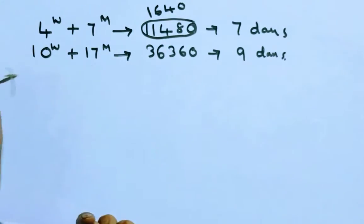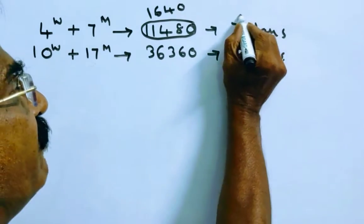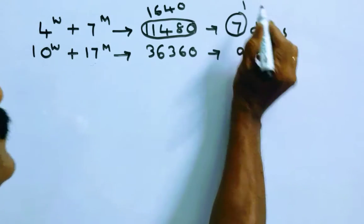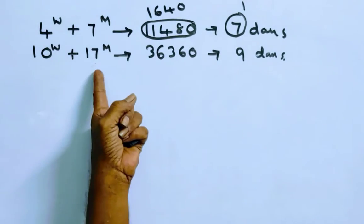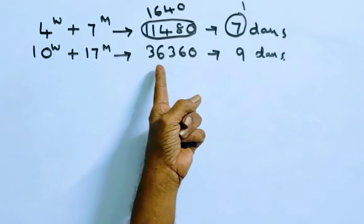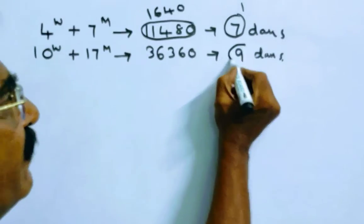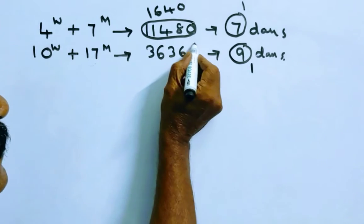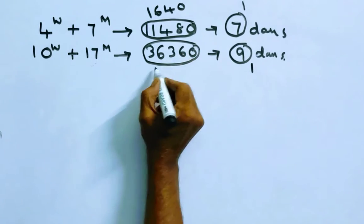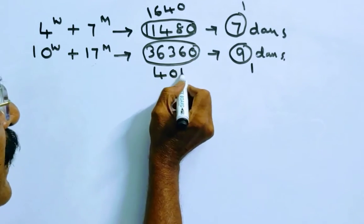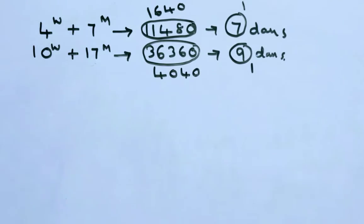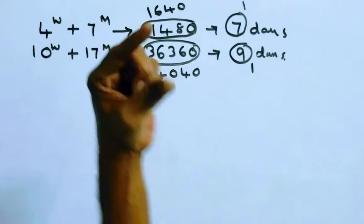In the same way, ten women plus seventeen men can earn 36,360 in nine days. So in one day, these people can earn 4,040. Friends, now we have two linear equations.